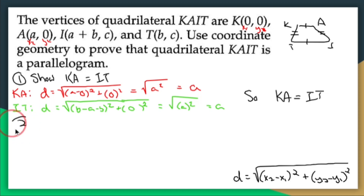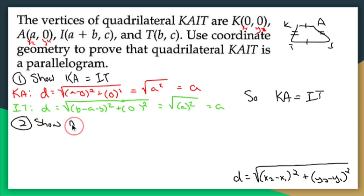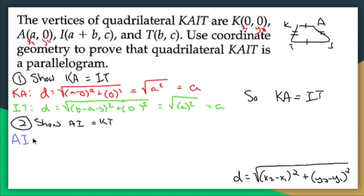Since KA equals a and IT equals a, KA equals IT. Thing number one: proved. Now I need to show AI equals KT.